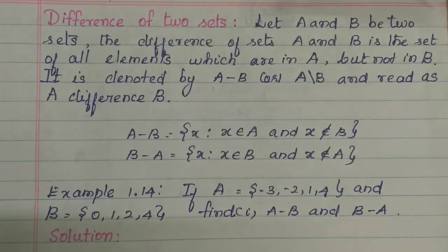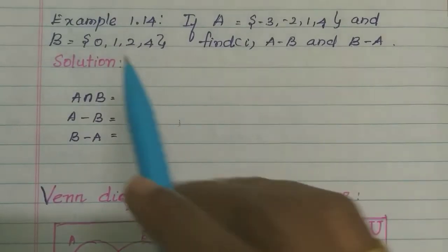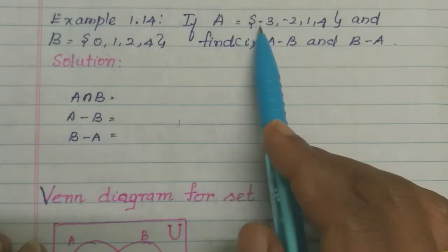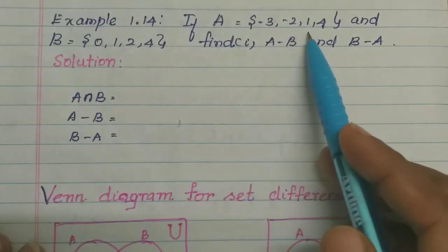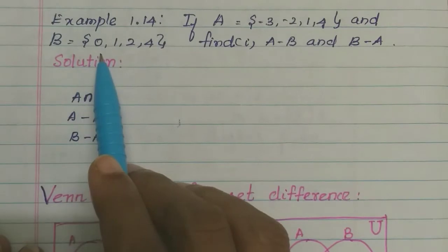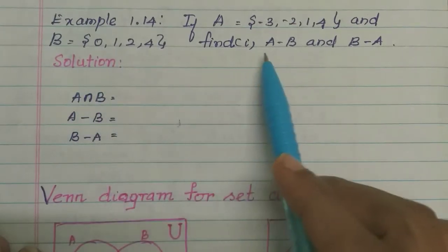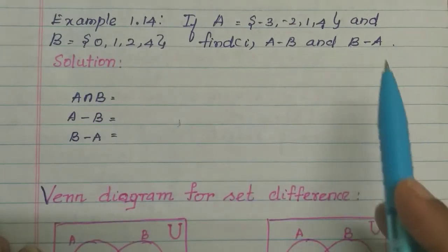So if we look at example 1.14: If A is equal to the set {-3, -2, 1, 4} and B is equal to the set {0, 1, 2, 4}, find A minus B and B minus A.